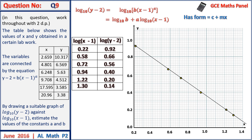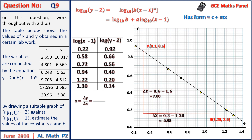After plotting all points and drawing the best fit line, we construct a triangle as large as possible to find the gradient. At point A the coordinates are (0.3, 8.6) and at point B they are (1.28, 1.6). The gradient a equals change in y on change in x equals 7.0 on minus 0.98, giving approximately 7.14 to two decimal places. The y-intercept from the graph is 0.94, which corresponds to log b equals 0.94, so b equals 10 to the power 0.94, which is approximately 8.71.